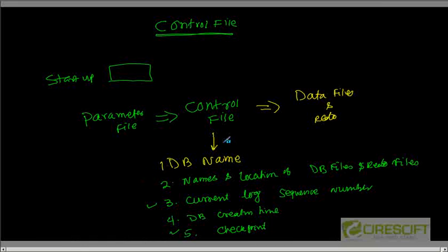An important point: the control file is a very important file, and if you lose it, you do not know where your data files or redo log files are. In that case, the database will not start, because at instance startup you need to know what data files and redo log files exist. The control file provides that information, and if it is not there, you cannot open the data files and the database will not start.